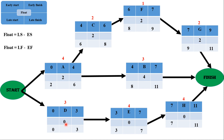One way to check your results: the float value from both formulas (latest start minus early start, and latest finish minus earliest finish) must be the same. If they differ, you've made a mistake in your calculations and need to go back and redo them. This is how you calculate early start, early finish, late start, and latest finish times for activities.